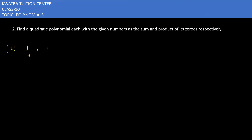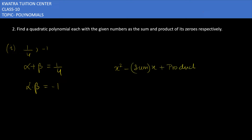Let's start with the second question. Find a quadratic polynomial with the given numbers as the sum and product of its zeros respectively. The sum alpha plus beta is 1/4 and the product alpha dot beta is minus 1. These are the two given values. To create the polynomial, we use the formula: x squared minus (sum)x plus product.